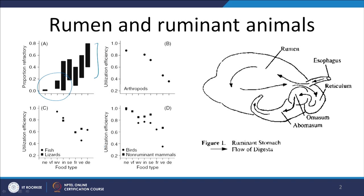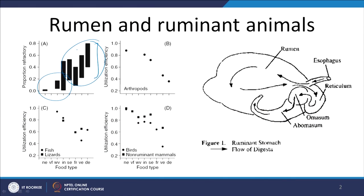If we look at different kinds of organisms and how efficiently they can degrade two different kinds of foods — those with very low refractory proportion and those very high in refractory content — we notice that fish and desert organisms can digest food with very low refractory proportion very well, but their efficiency drops by up to 60% for fish when the refractory portion rises.